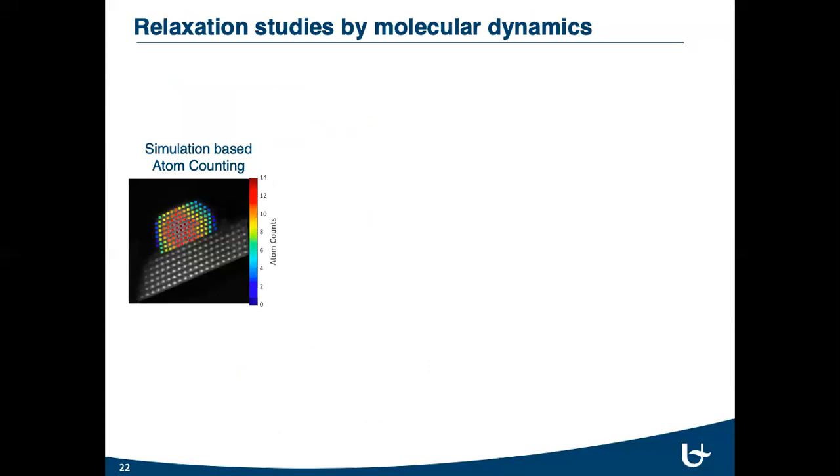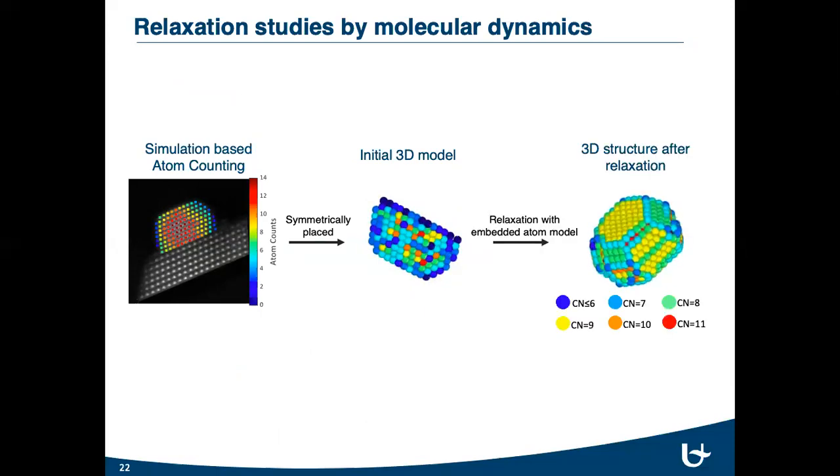So, now we estimated the total number of atoms at each atomic column. Then, by placing the atoms symmetrically based on crystalline structure and zone axis, we can obtain an initial model of gold nanoparticles. Then, to obtain the final structure, the nanoparticle is relaxed by molecular dynamic simulations with embedded atom model.